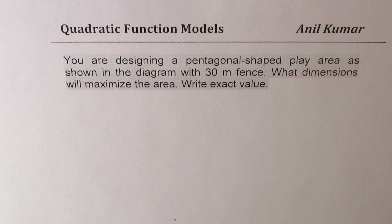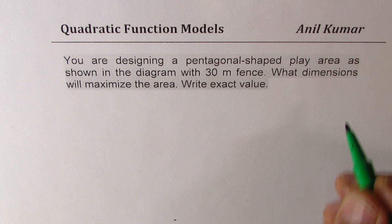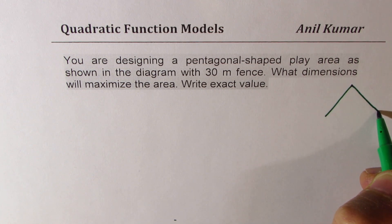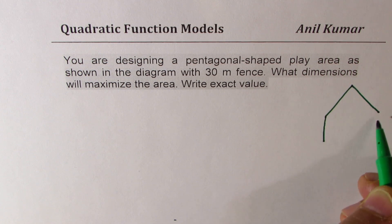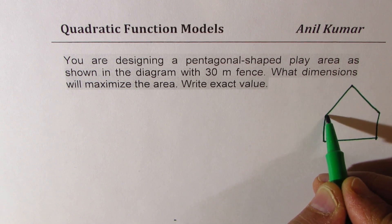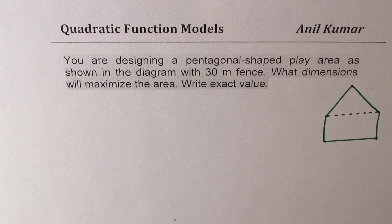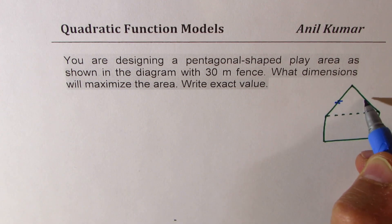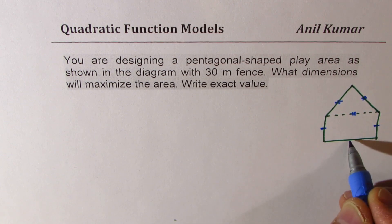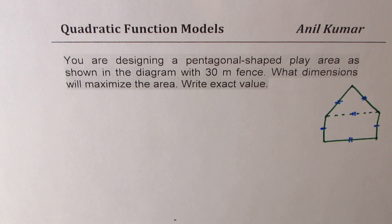What dimensions will maximize the area? We need exact values. Let me sketch one here — we'll have a triangle on the top of this pentagon and a rectangle below. Joining with dotted lines, we are given that these sides are equal, making it an equilateral triangle on top and a rectangle on the bottom. You can always pause the video, answer this question, and then look into my suggestions.